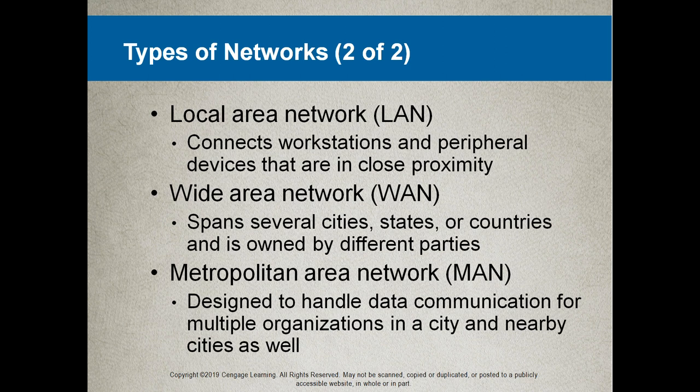A local area network (LAN) connects workstations and peripheral devices that are in close proximity, typically inside a classroom or a building. A wide area network (WAN) spans several cities, states, or countries and is owned by different parties. The LAN is that part of the network that you own — the moment you interconnect to somebody else's network you're talking a WAN. A metropolitan area network (MAN) is designed to handle data communication for multiple organizations in a city and nearby cities.